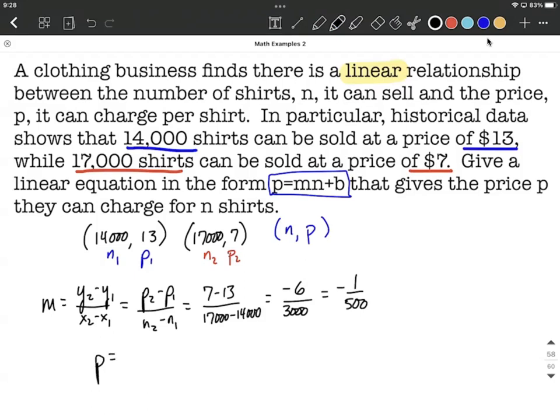We're going to use that to be our M in our formula. So filling that in, it looks like P equals negative 1 over 500 times N plus B. Now at this point, we don't know B, which would be our Y-intercept in a normal equation.